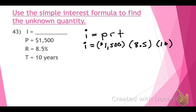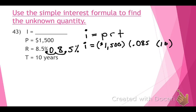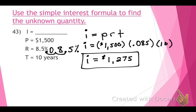Ashley, how would I do that? Move the decimal two spaces to the left — put that zero in there. So we want to multiply by 0.085 instead of 8.5%. Put that in your calculator. The interest is $1,275. What unit should be attached to that? The dollar sign, because it's talking about the interest — the amount of money. $1,275 is correct for the interest. Excellent job.